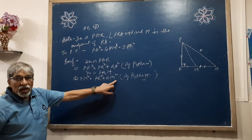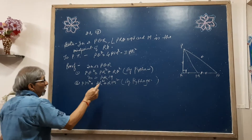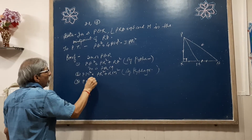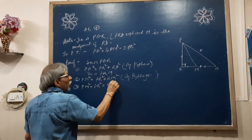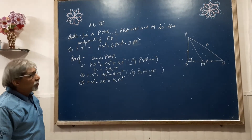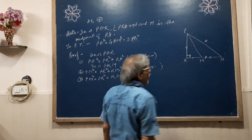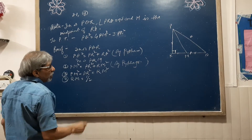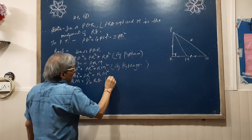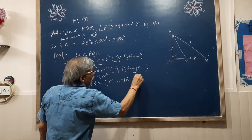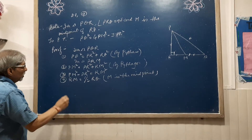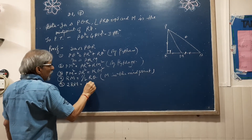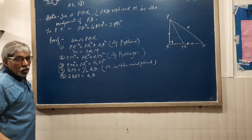With statement 2, we can find the value of RM squared. PR squared comes to the left-hand side, giving us PM squared minus PR squared equals RM squared — this is statement number 3. Since M is the midpoint of RQ, RM equals half of RQ, that is, 2RM equals RQ.